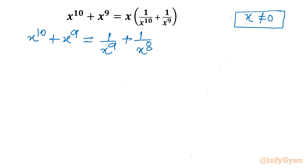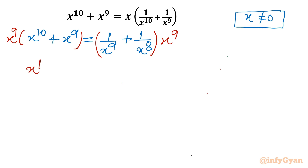Since x is non-zero, I can multiply both sides by x^9. On the left-hand side it becomes x^19 + x^18, equal to 1 + x.